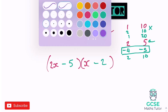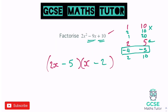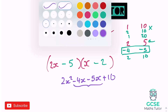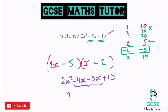Expanding to check: 2x times x is 2x squared, 2x times negative 2 is negative 4x, negative 5 times x is negative 5x, and negative 5 times negative 2 gives positive 10 at the end. Tidying that up, negative 4x and negative 5x make negative 9x, and we get 2x squared minus 9x plus 10 — it matches what we were looking for.